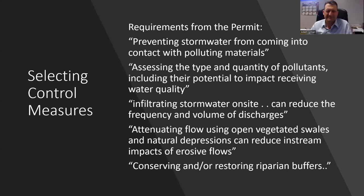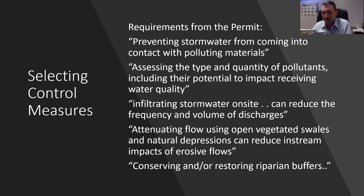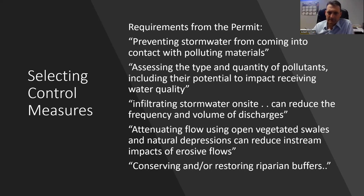When selecting control measures — same for all industrial activities — you select measures that prevent stormwater from contacting polluted materials, assessing the type and quantity of pollutants including their potential to impact a receiving water body. You can infiltrate stormwater on site to reduce discharge, or collect into ponds. For concrete sites especially, having collection facilities is a huge advantage because you have to address pH in runoff. Using open swales and vegetation to attenuate flow and reduce pollutants is also a big advantage. Some older gravel pits use old ponds — pumping water from active mining into vegetated old ponds — and you can avoid a lot of risk that way.